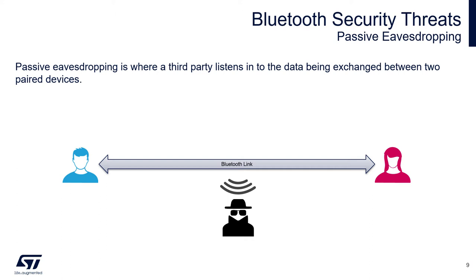If the two parties want to encrypt the link, they first need to go through the so-called pairing procedure, which is the derivation of a shared secret that is later used to encrypt the link. In some older versions of Bluetooth, prior to Bluetooth 4.2, there is a possible issue. If a passive eavesdropper is present during this negotiation of the shared secret, the attacker can also derive the key, which means it can make sense of the data even though the link is encrypted.